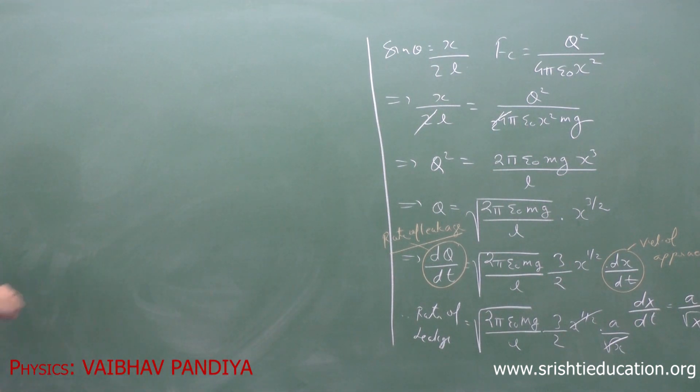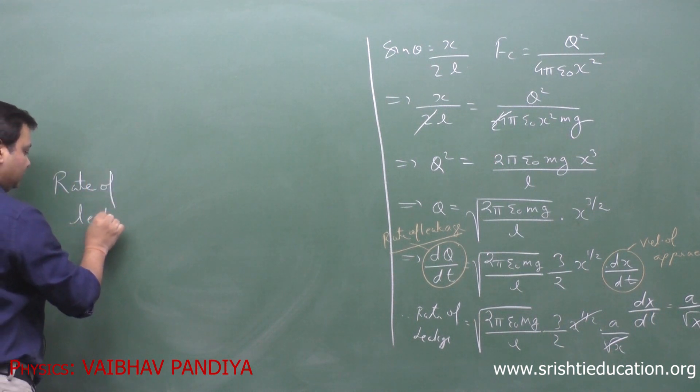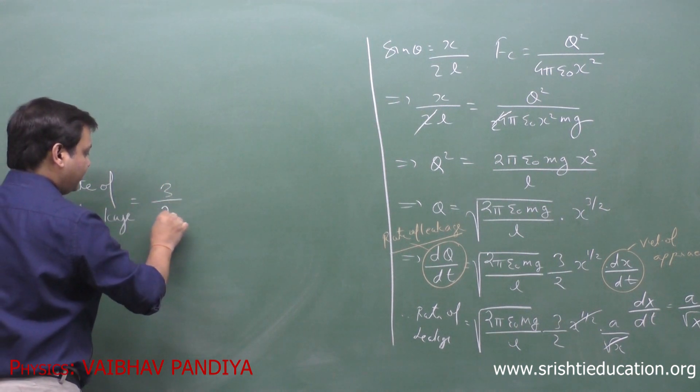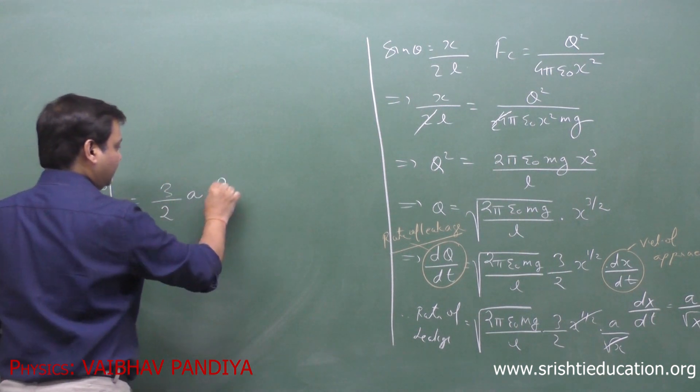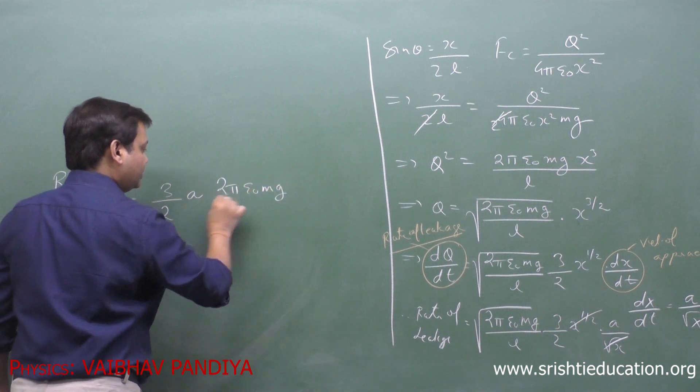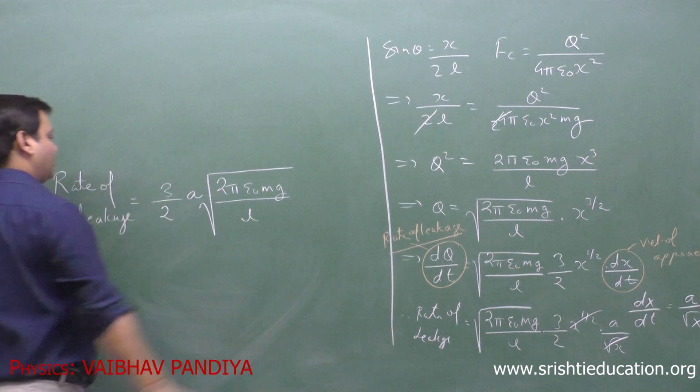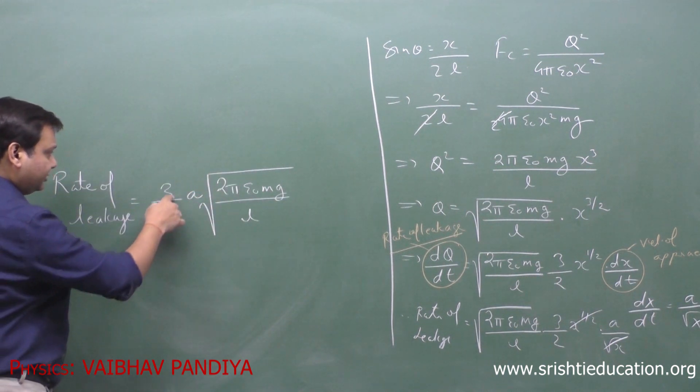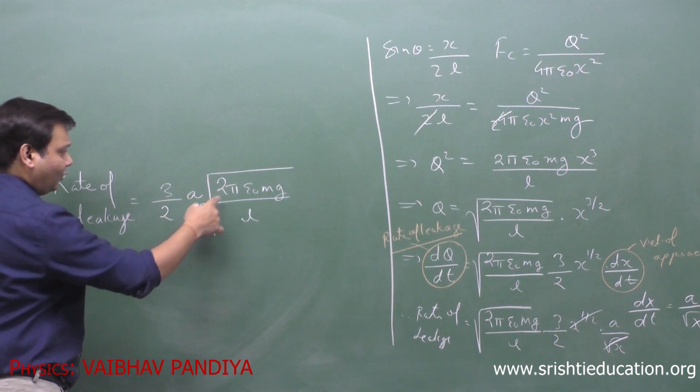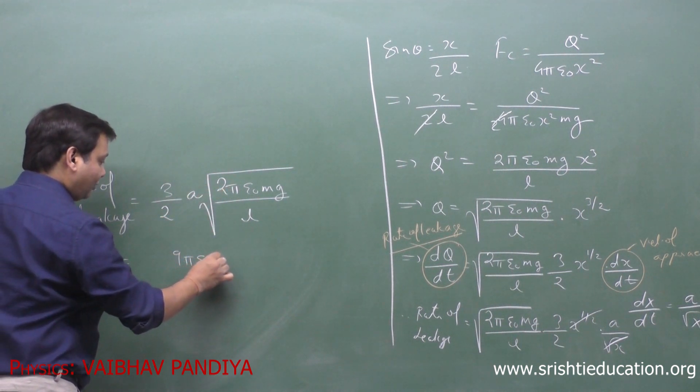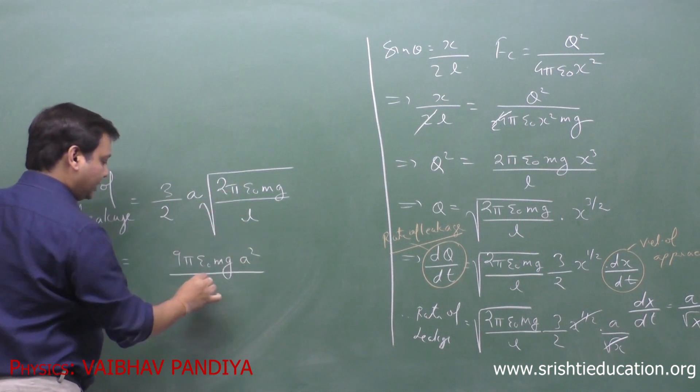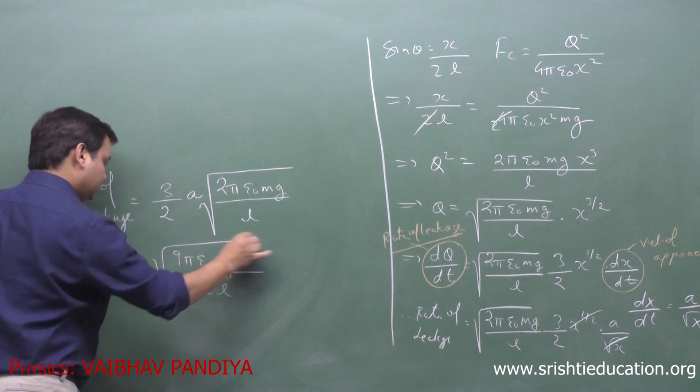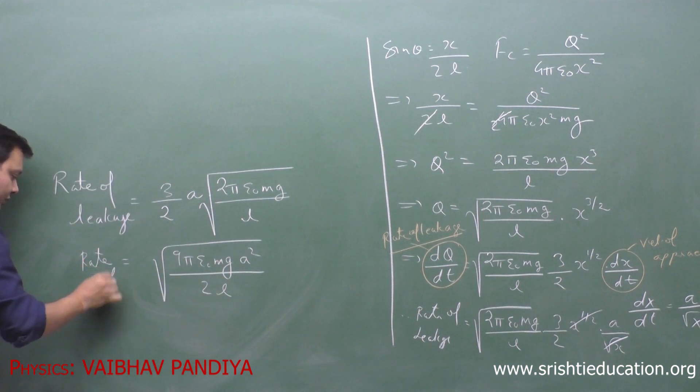So our rate of leakage value is 3 by 2 a multiplied by square root of (2 pi epsilon 0 Mg divided by L). You can also write this as square root of (9 pi epsilon 0 Mg a squared divided by 2L). This is the rate of leakage.